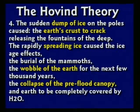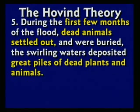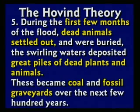The cold air hitting warm air made the canopy that used to protect the earth collapse and rain down — 40 days and 40 nights. The canopy is no longer up there; we're not protected like before the flood, and the earth was completely covered by water. During the first few months of the flood, dead animals settled and were buried, becoming fossils. Swirling waters deposited piles of dead plants and animals, which became coal and fossil graveyards.